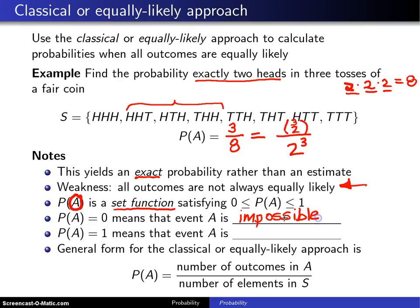And if you ever get the other extreme, that is P(A) equals one, that would mean that the event A is certain to occur.